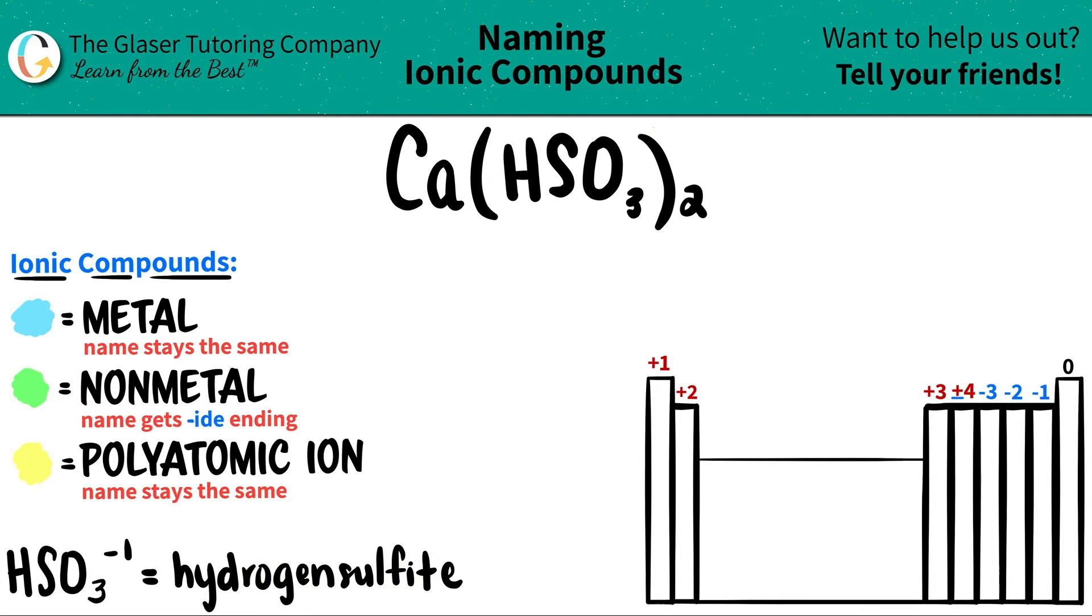Now, some teachers or professors might have this in two words, so it could be hydrogen space sulfite. Sometimes you see it in one word, or sometimes you'll see HSO₃ being as bisulfite. So just check your teacher or professor to make sure which one they want. But either one is fine with me. I'm going to use hydrogen sulfite as one word.